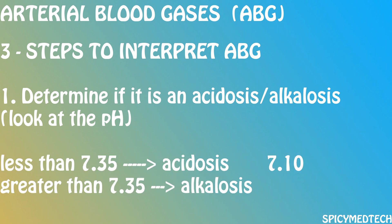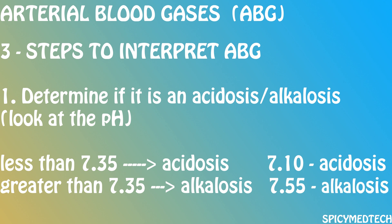For example, with a pH of 7.10, we check if it's greater than 7.45 or less than 7.35. In this case it's less than 7.35, therefore a pH of 7.10 indicates an acidosis. How about a pH of 7.55? It's not less than 7.35, so it cannot be an acidosis. It's not normal either. It is greater than 7.45, therefore it indicates that the patient is in an alkalotic state.